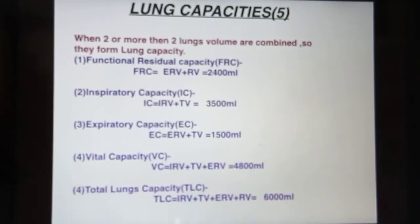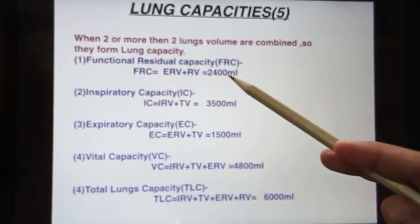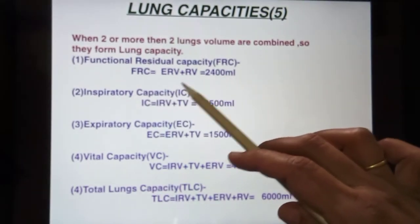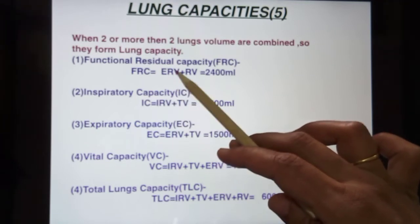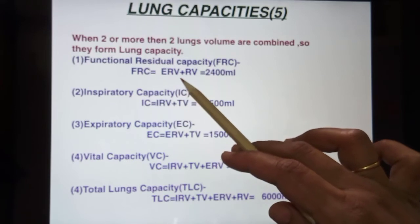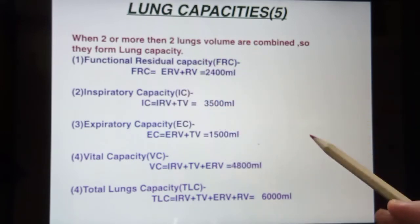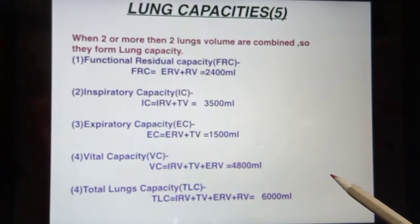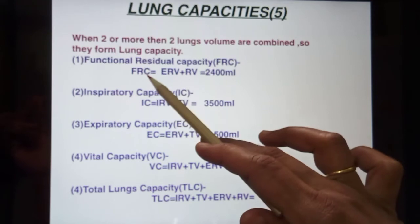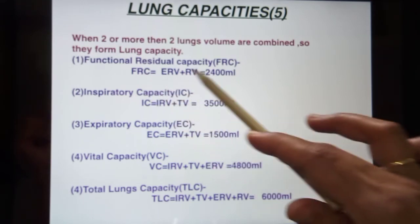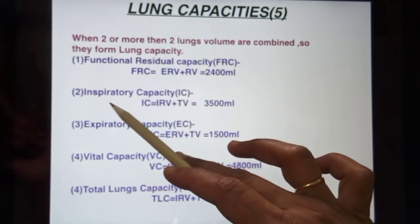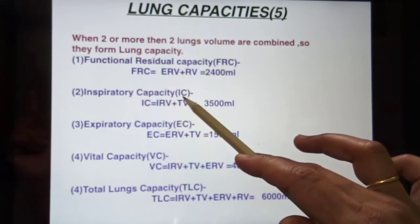The first capacity is functional residual capacity, or FRC. FRC equals ERV plus RV — that is expiratory reserve volume plus residual volume. When you expire forcefully and some air still remains in your lungs, combining those gives functional residual capacity, which is about 2400 ml. The second is inspiratory capacity.